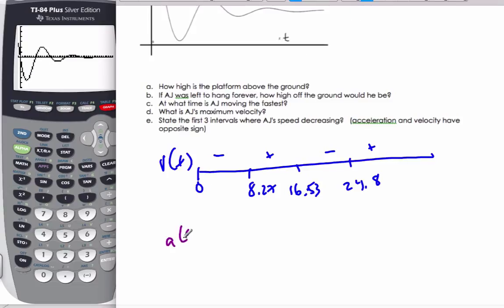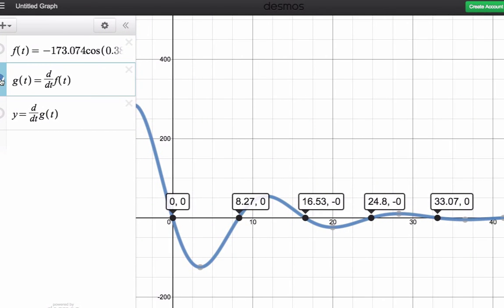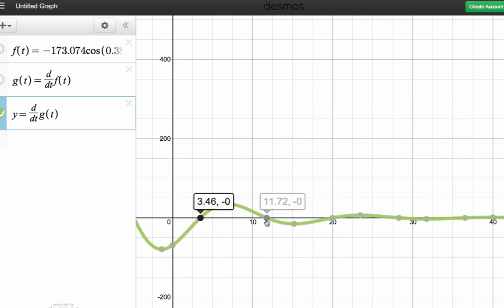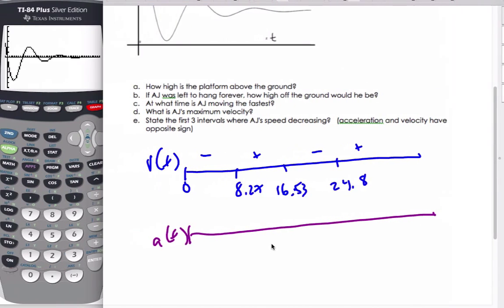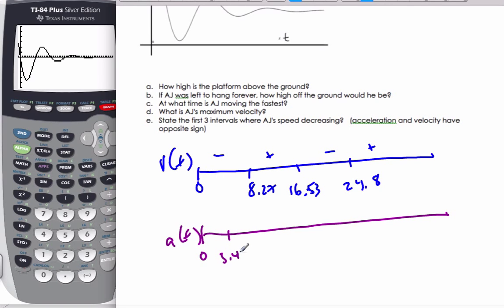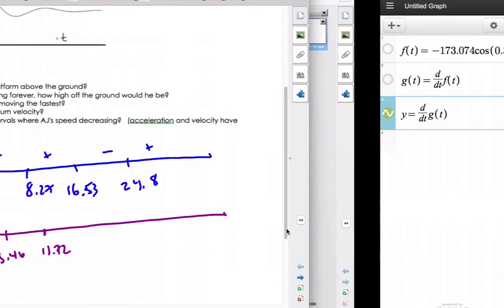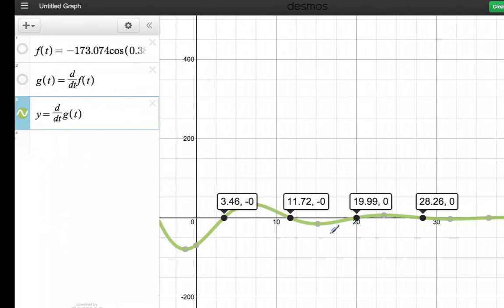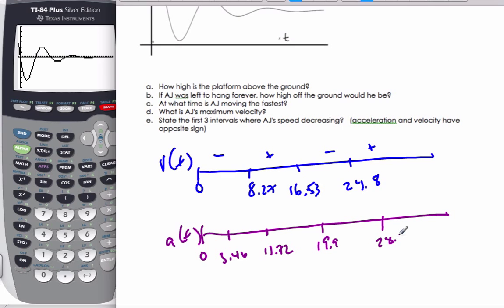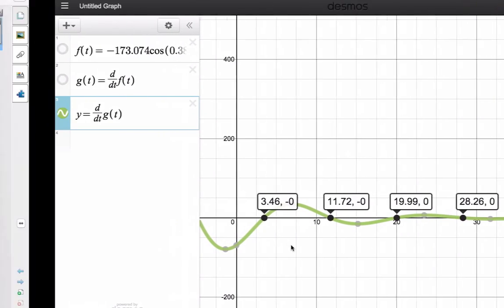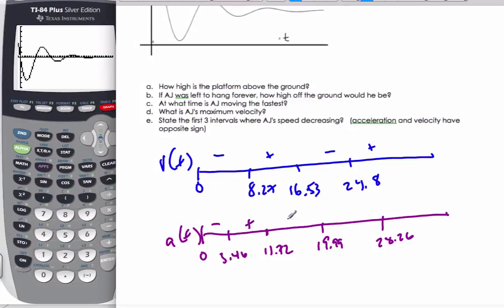Acceleration, on the other hand. If I continue to go from 0 onward, if I turn on my acceleration, which is this function, the derivative of it, I get all these points here for intercepts. So I get 0, 3.46, 11.72, and 19.9, which is in here, and then 28.26. These are all my zeros. And my acceleration starts off as negative, positive, negative, positive, negative. And what I do then is I make intervals as such.